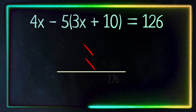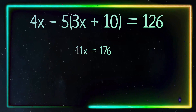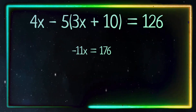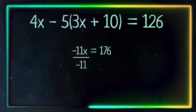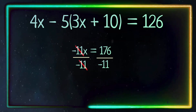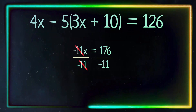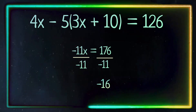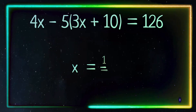So now we have negative 11x equals 176. We want to get x by itself, so we have to divide both sides by negative 11. Let's cancel out the negative 11 on the left side. On the right side, 176 divided by negative 11 equals negative 16, giving us our answer: x equals negative 16.